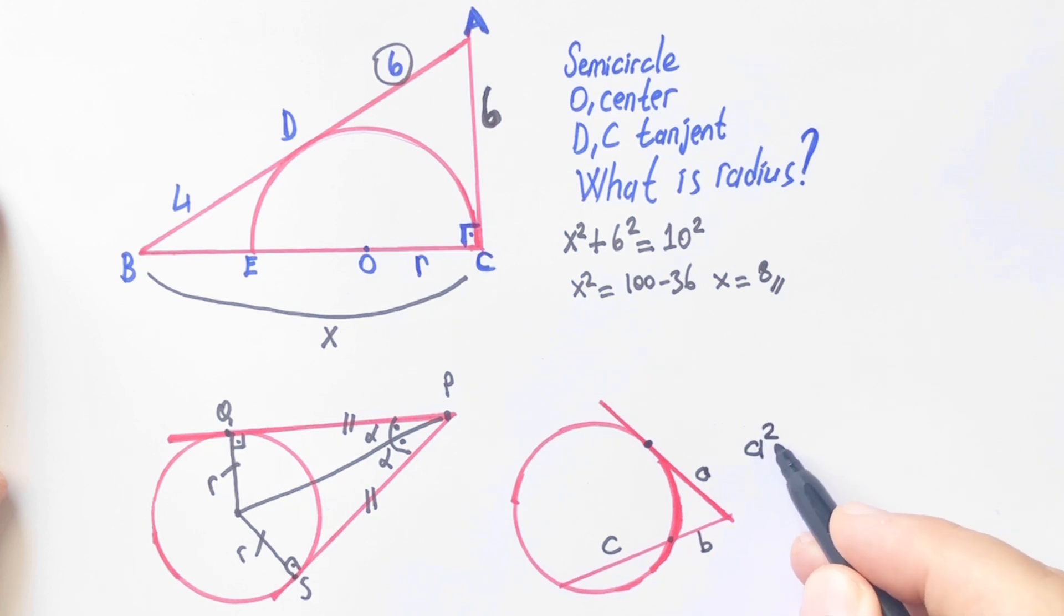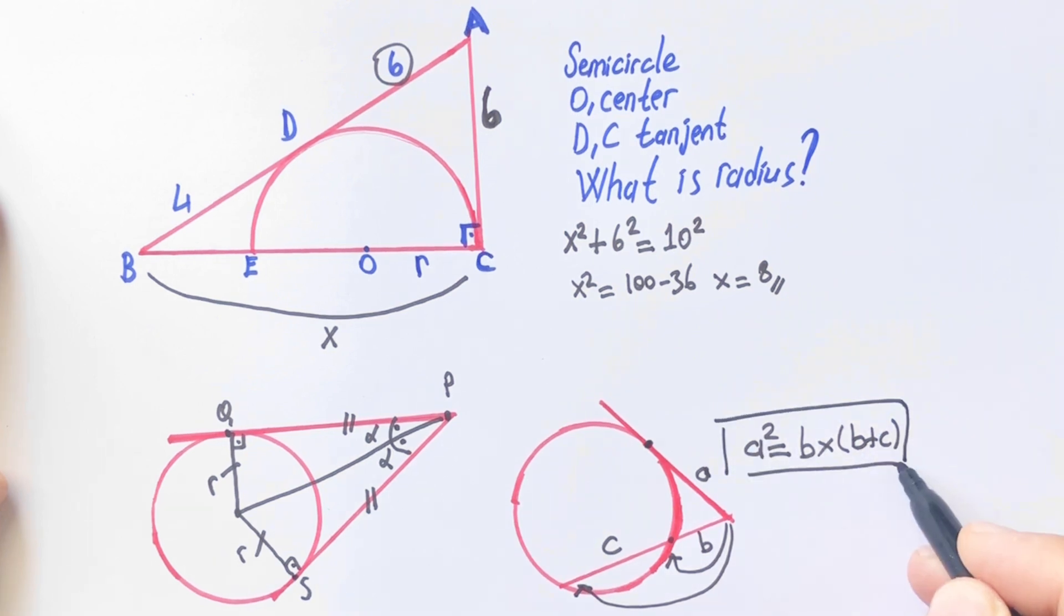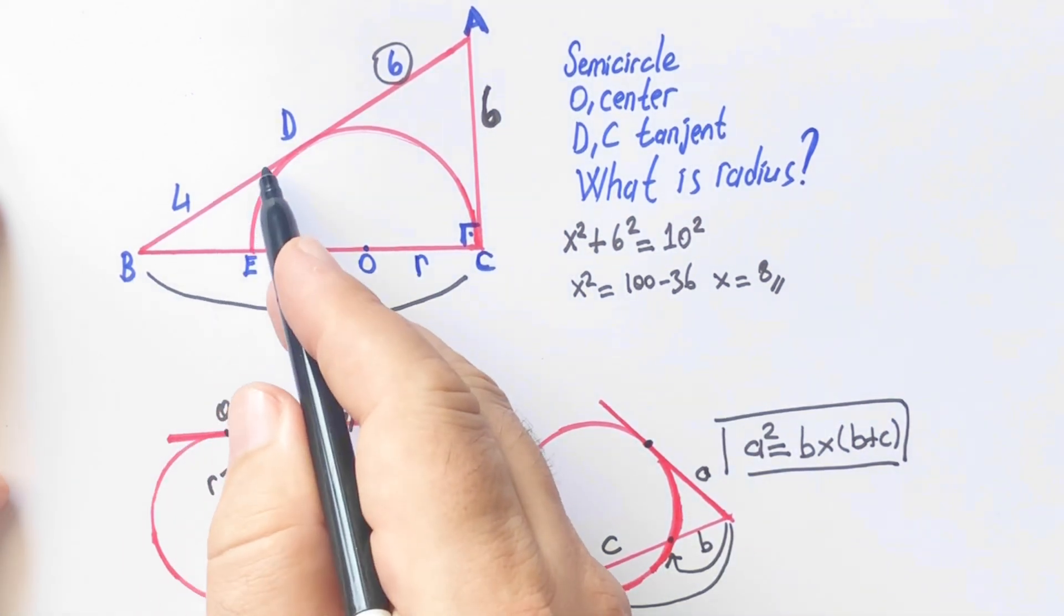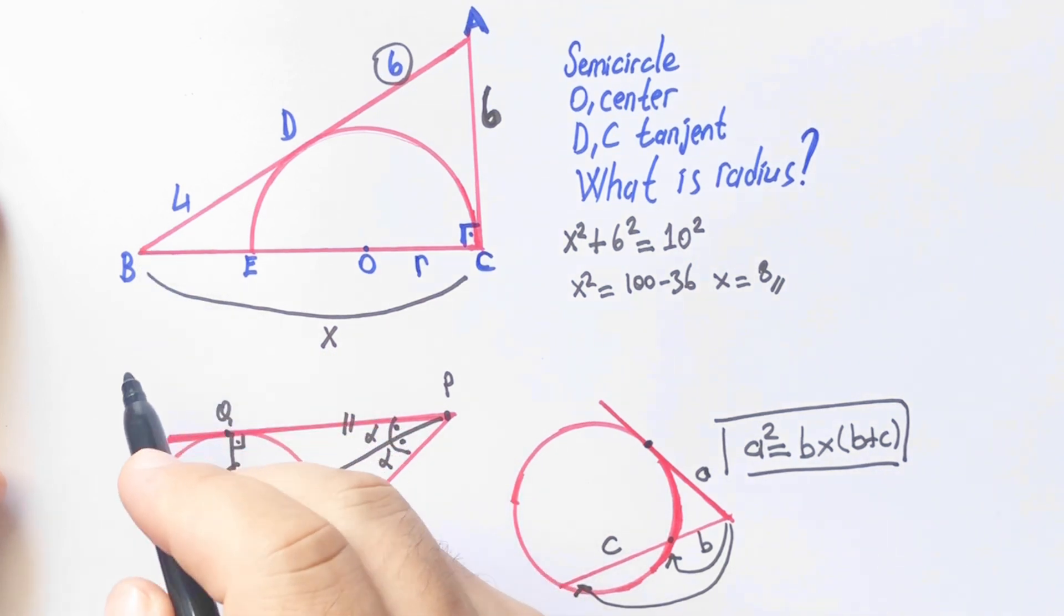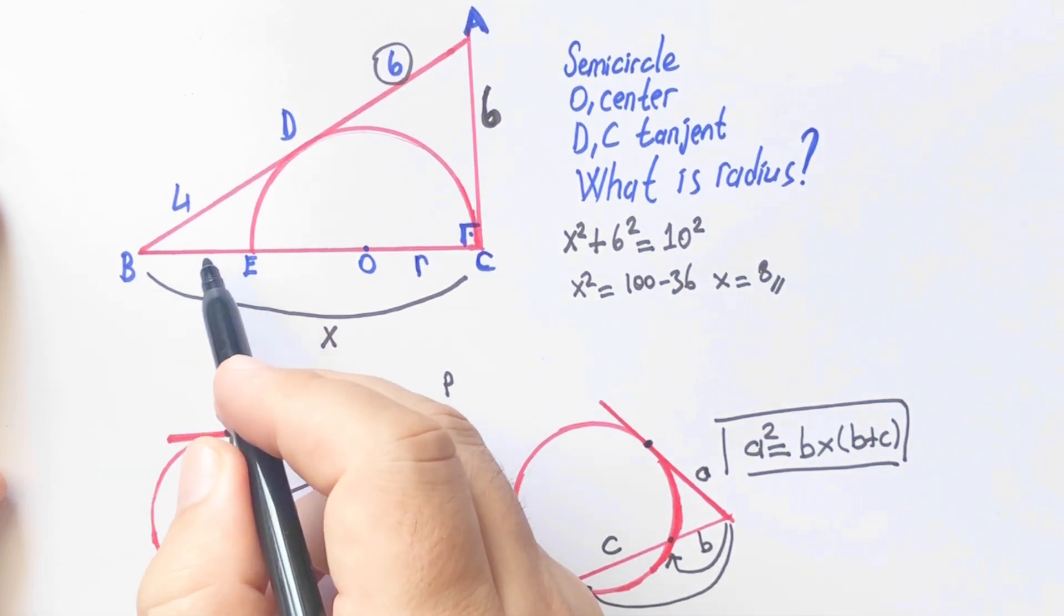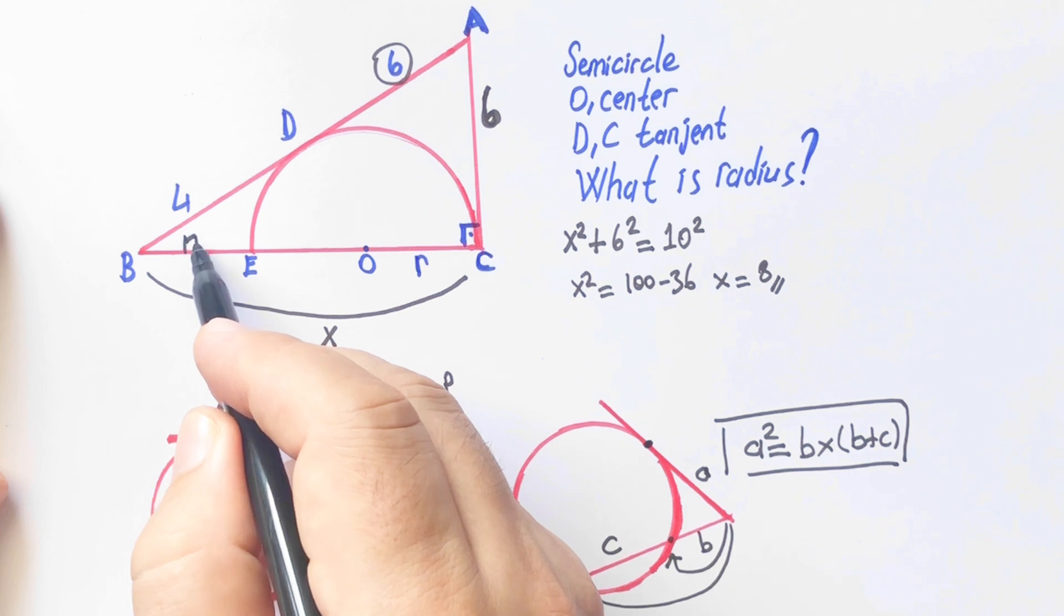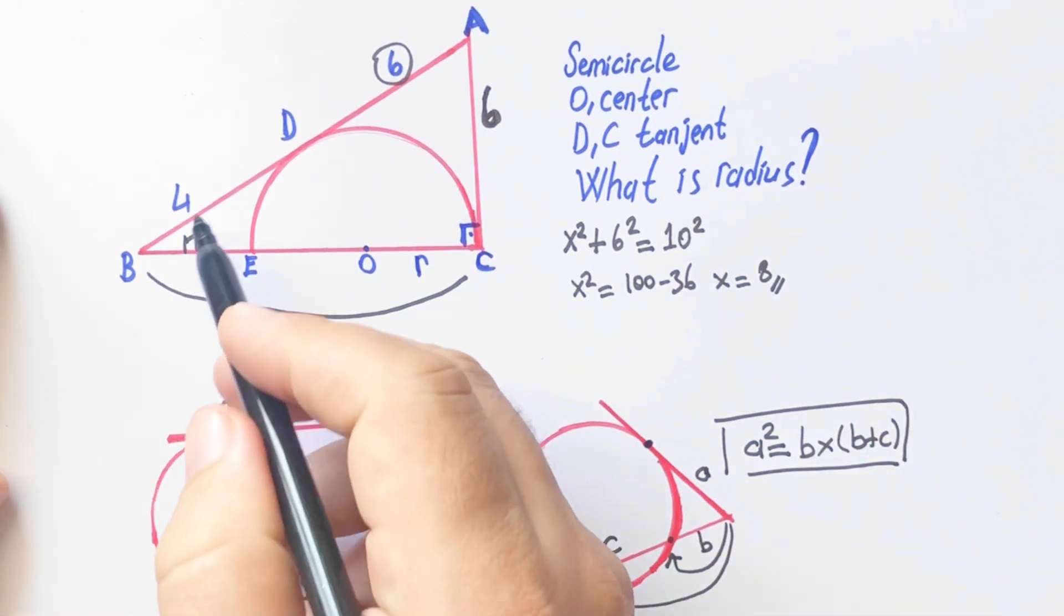A squared equals first part B times whole length B plus C. So let's call here B, let's call here M. If we apply the tangent secant theorem.